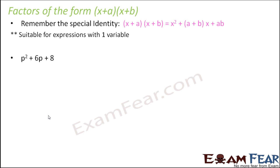So let us suppose you have this expression p² + 6p + 8. So when you look at this expression, it has 3 terms. The first term is a perfect square, but the last term is not a perfect square. So therefore, it doesn't fit into the standard identity of (a+b) whole square. It doesn't fit into that. So what do we do?